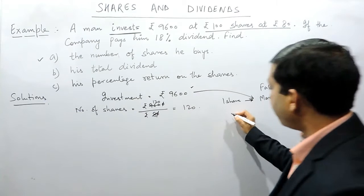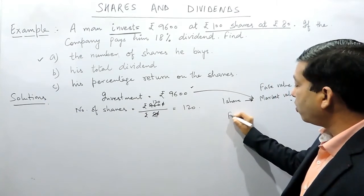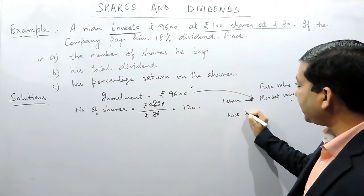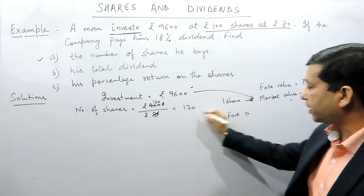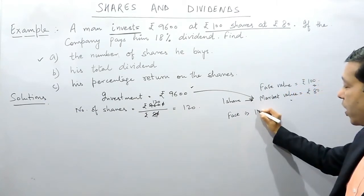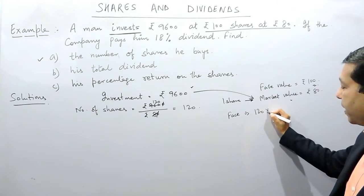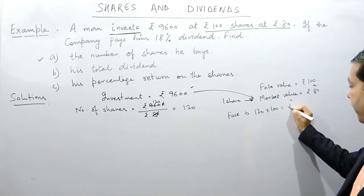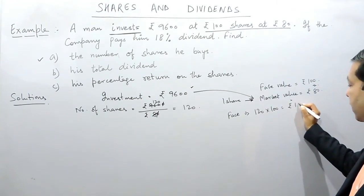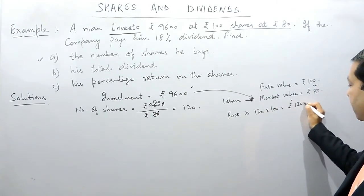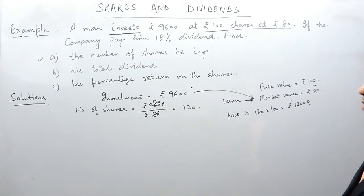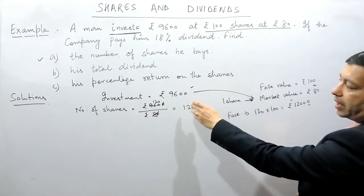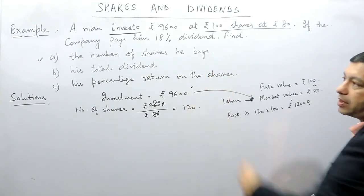We are clear that the face value of these 120 shares is 120 multiplied by 100, which is rupees 12,000. While the market value at which this person invested is rupees 9,600.